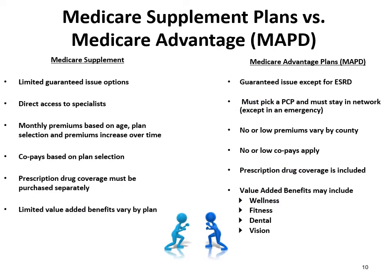When you join Medicare, besides straight Medicare, you can select a Medicare Supplement Plan or a Medicare Advantage Plan. Consideration 1: A Medicare Supplement Plan has limited guaranteed issue options and availability may be based on your health history. A Medicare Advantage Plan with prescription drug coverage, or MAPD, is guaranteed issue except for end-stage renal disease. Consideration 2: With a supplement plan, you have direct access to specialists; with an MAPD plan, you must select a primary care physician, get a referral for a specialist, and stay within the designated provider network.